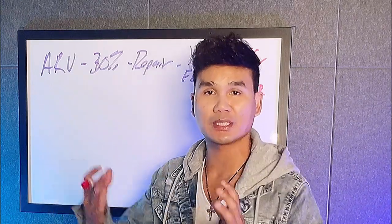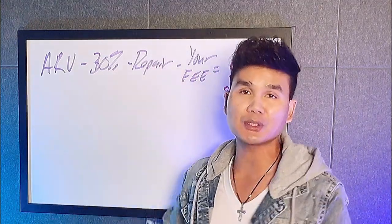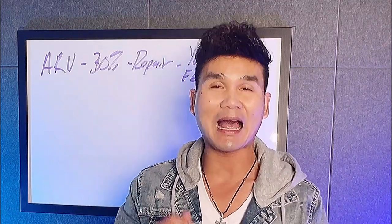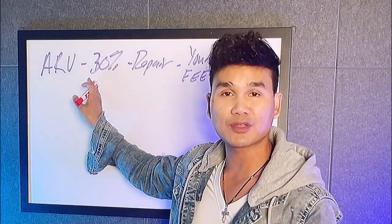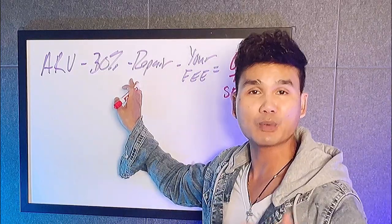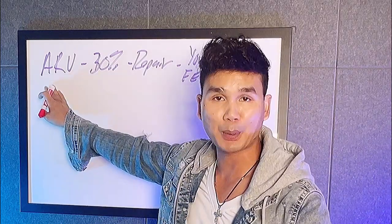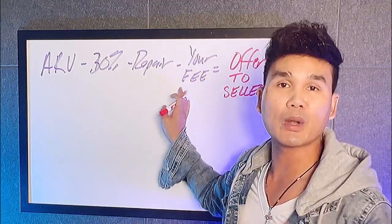You want to understand the wholesaling formula so you know exactly what to offer the seller. It's ARV — after repair value — what is the property worth after it's fixed in perfect condition? Then you minus 30%. That's just a rule of thumb. You need to understand your market, because some markets have higher demand and some have lower demand with not a lot of buyers in the area. Sometimes you might need to go lower than 30%. But typically, if you can get a property under contract at a 30% discount minus repair costs — whatever the property needs to fix it up to perfect condition — that's your starting point.